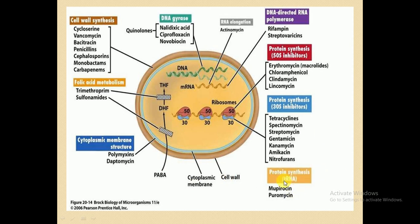Protein synthesis inhibitors include mupirocin and fusidic acid. Another group includes tetracycline, spectinomycin, streptomycin, gentamicin, kanamycin, amikacin, and nitrofurans, which target the 30S ribosomal subunit. Erythromycin and macrolides, chloramphenicol, clindamycin, and lincomycin target the 50S ribosomal subunit. Ribosomes are essential for protein production, so inhibiting them stops microbial growth.